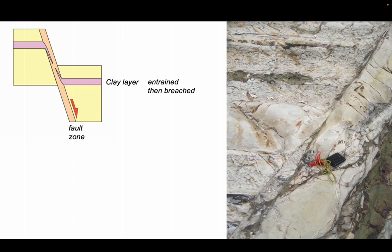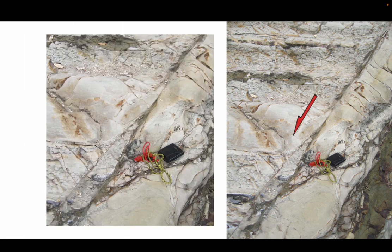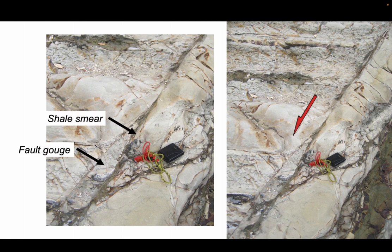Let's examine this qualitatively in outcrop again. Here's a nice outcrop from New Zealand which shows a fault zone like this. We can zoom in and see that there's fault gouge and shale or clay smear just along the fault in that dark streaky material, but the shale smear is not continuous along the fault zone here - it's been breached.